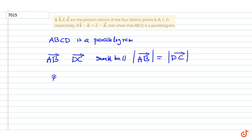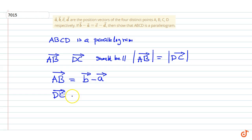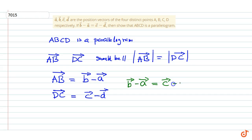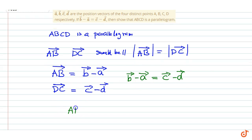From the given position vectors, vector AB equals vector b minus vector a, and vector DC equals vector c minus vector d. It is given that vector b minus vector a equals vector c minus vector d, which means vector AB is parallel to vector DC.